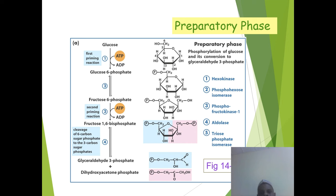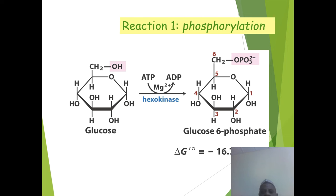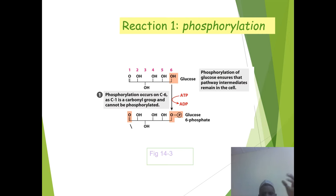This is the structure of glucose, glucose-6-phosphate, and fructose-1,6-bisphosphate. Reaction 1 is the phosphorylation of glucose at position 6 to produce glucose-6-phosphate. This is a highly exergonic reaction with a delta G standard of minus 16.7 kJ per mole.